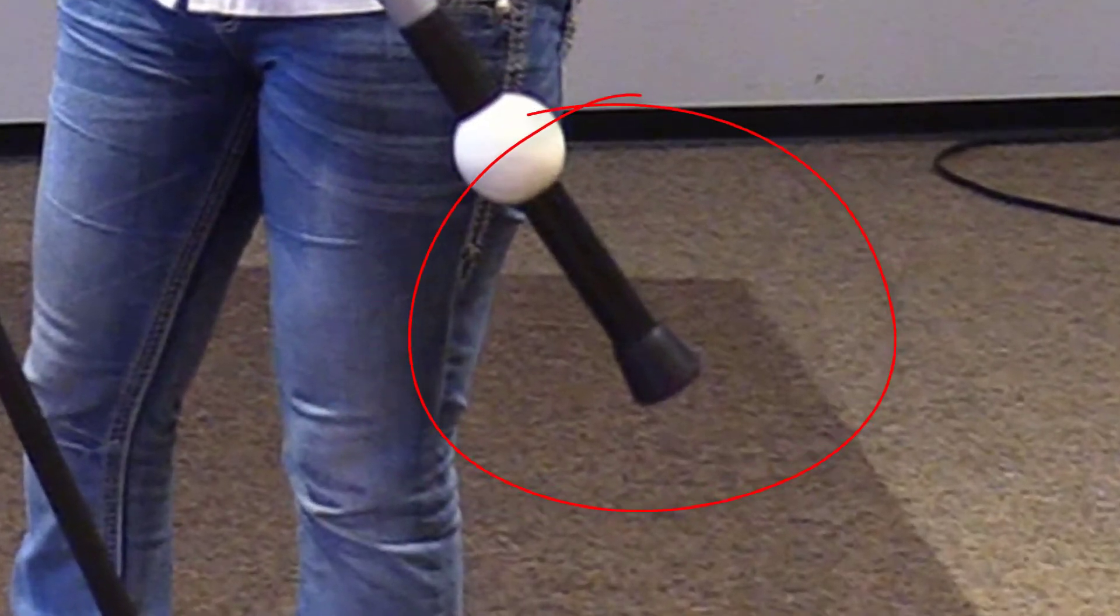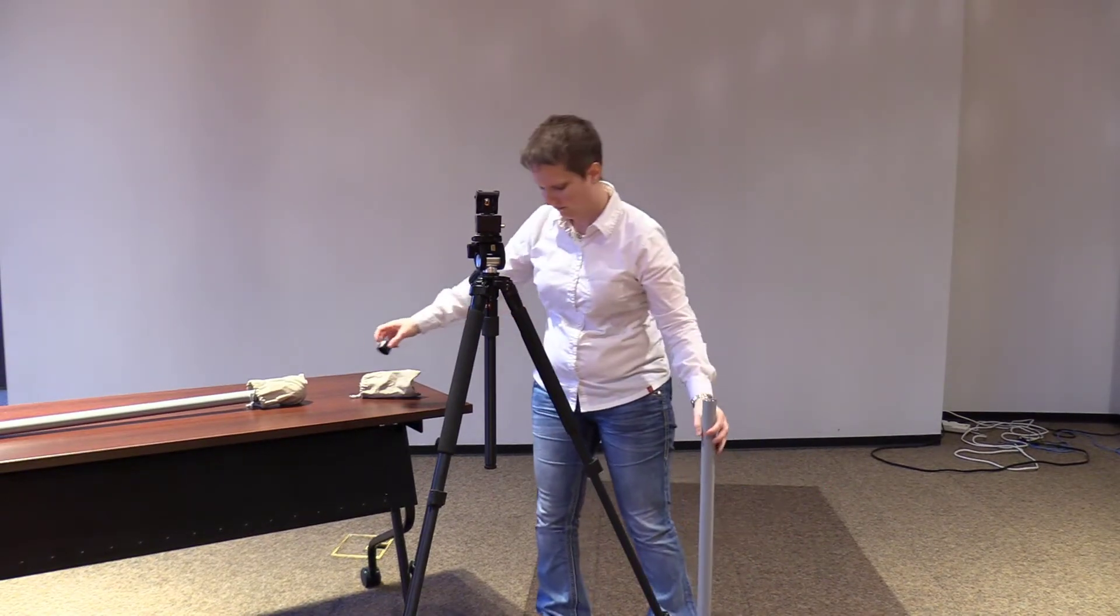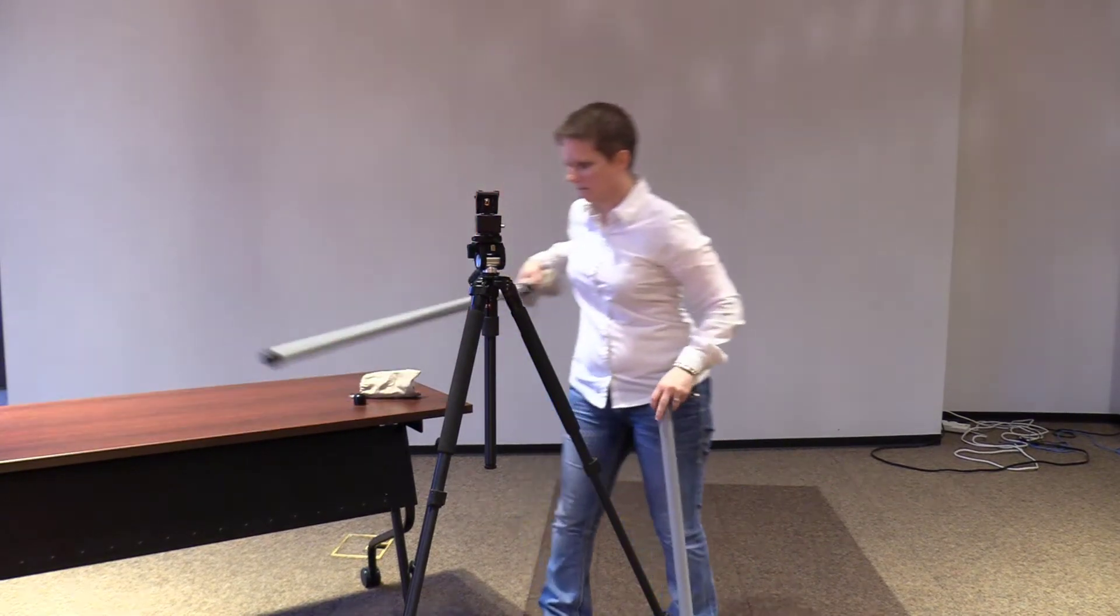When combining the two parts, one of the handles has a foot attached. This is the end of the scale bar that should be placed on the ground when tightening the two pieces.